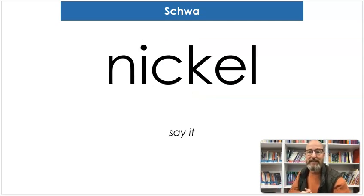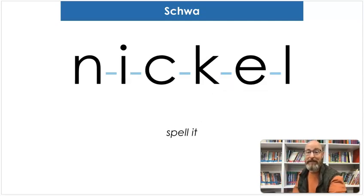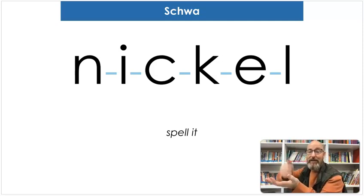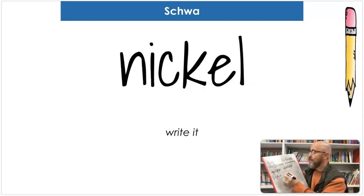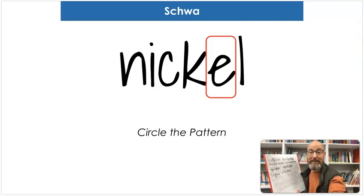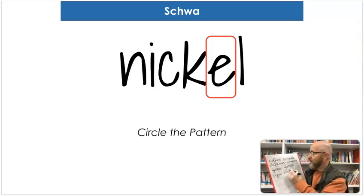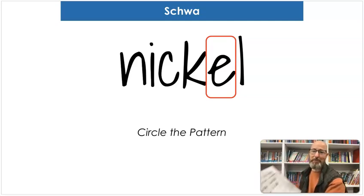Our next word is 'nickel.' Say nickel. Worth five cents. Map the sounds: N-I-C-E-L. Nickel. Spell it: N-I-C-E-L. Nickel. And let's write it: N-I-C-E-L. And our schwa is the E — that's right. Nickel. The reason the I is not a schwa is because it's in the stressed part of the syllable — it's a stressed syllable.